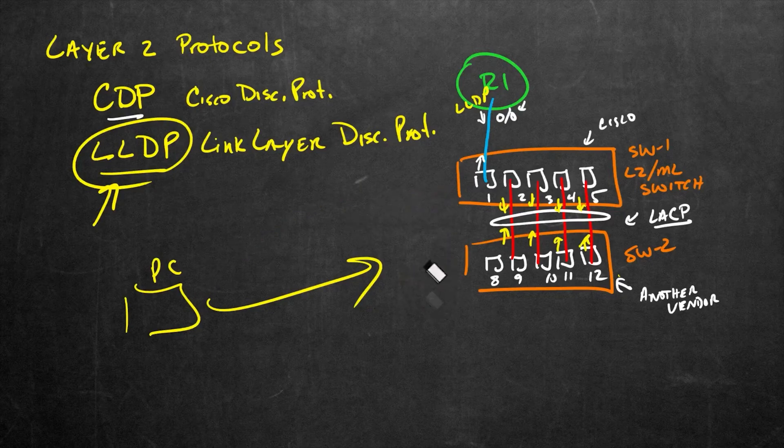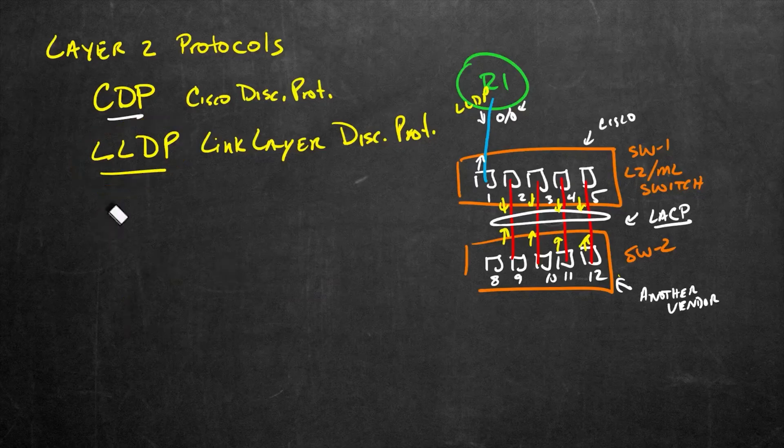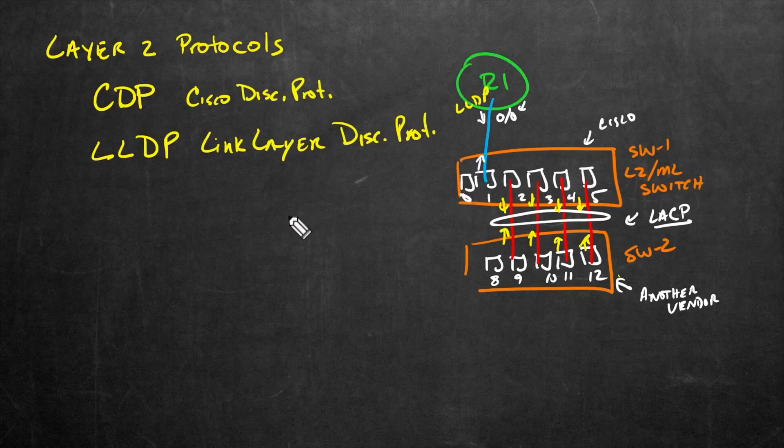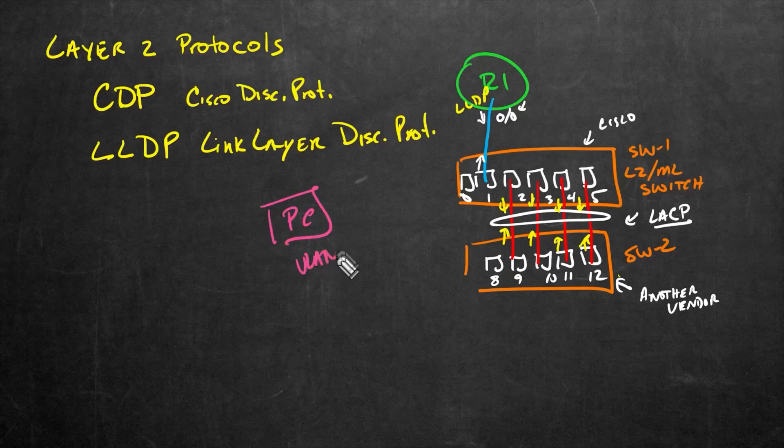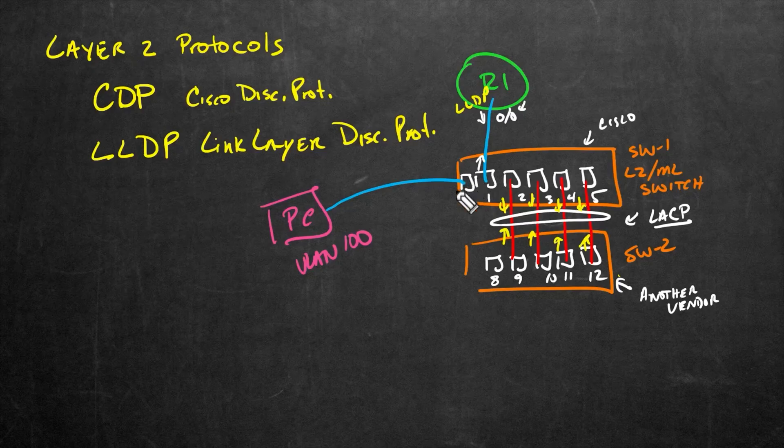So let me clean a little bit of this up. And let's also talk about a few other benefits regarding a layer two discovery protocol. Let's imagine on switch one right here, the Cisco switch, that we have port zero. And let's also imagine we have a PC that is going to be in VLAN 100.